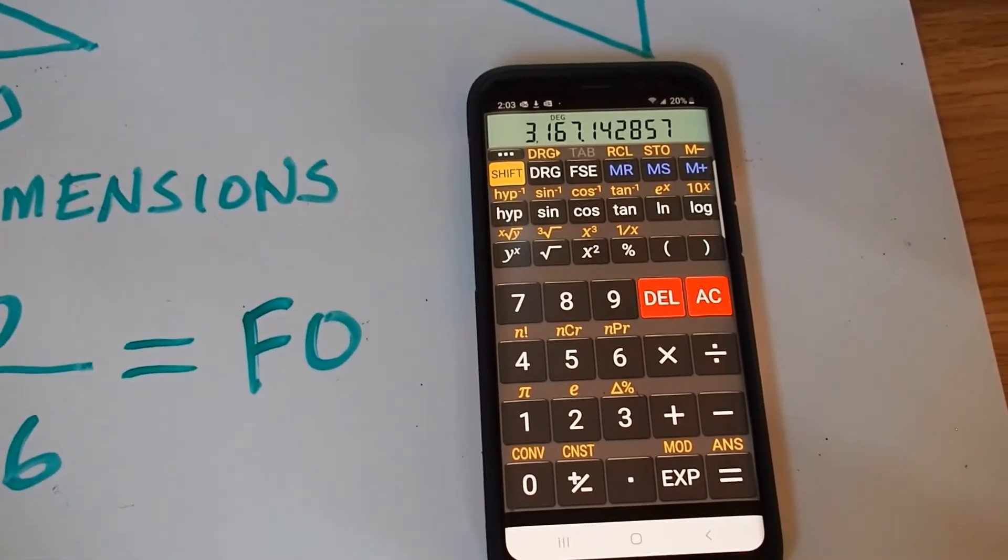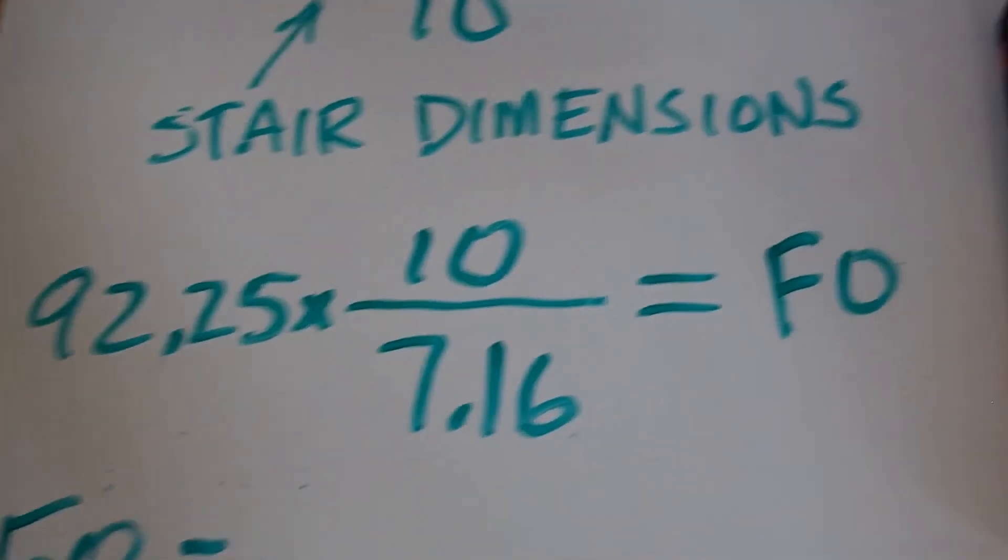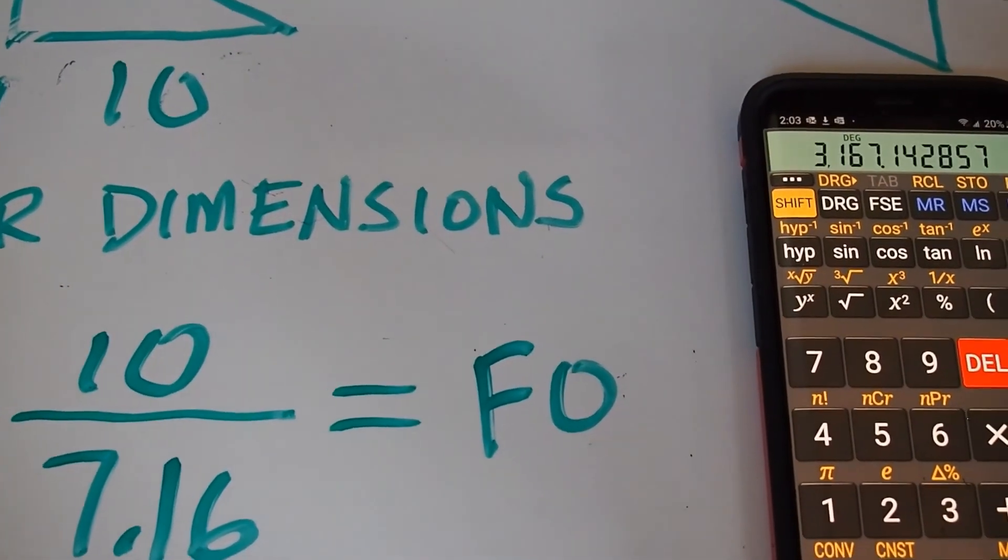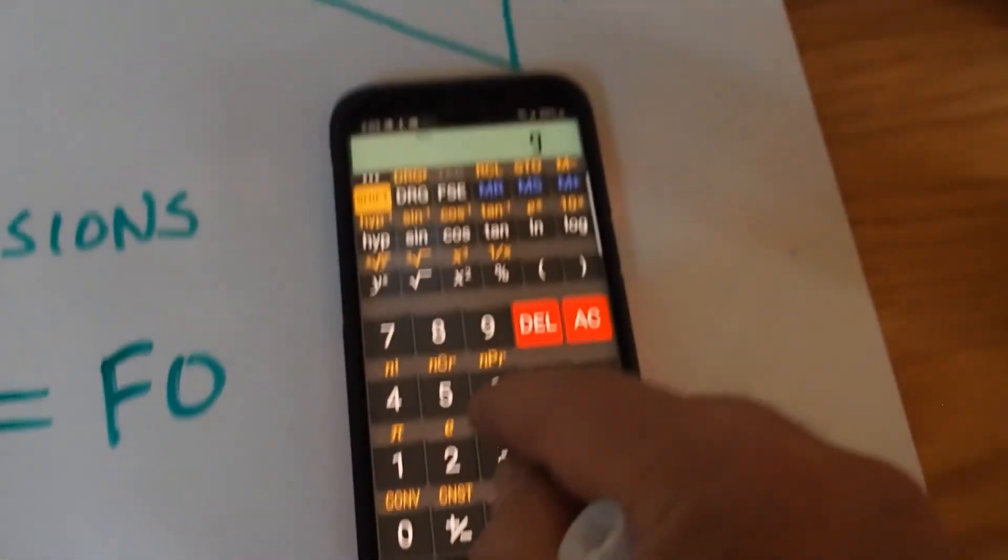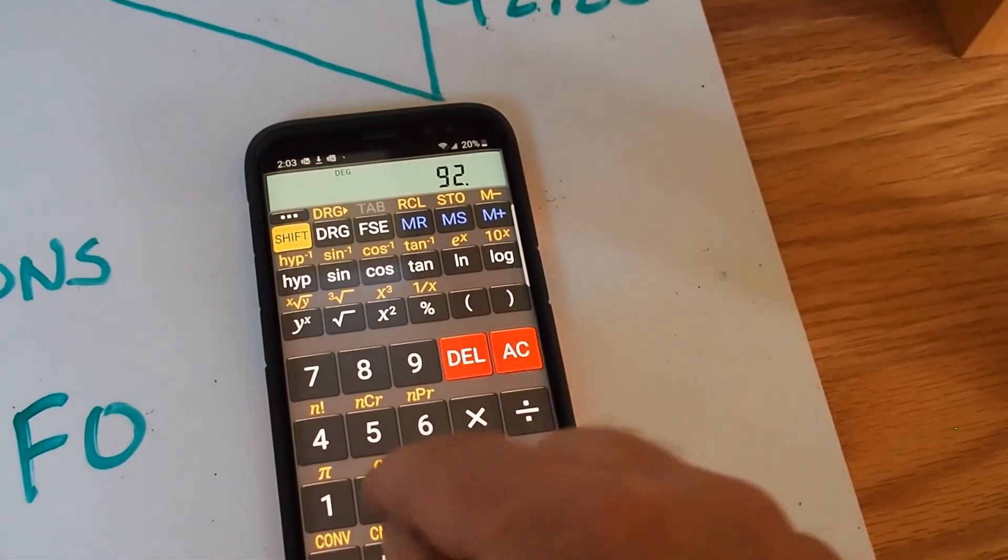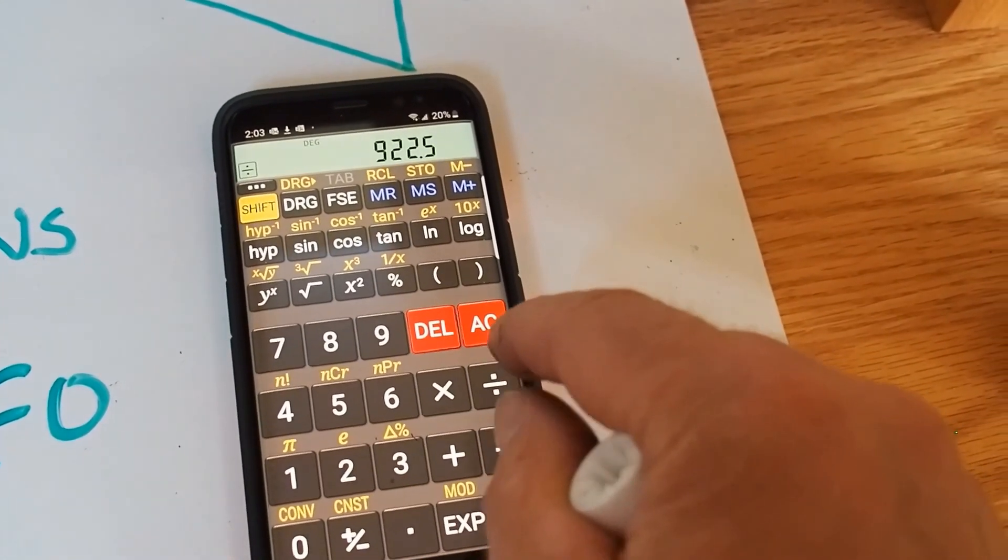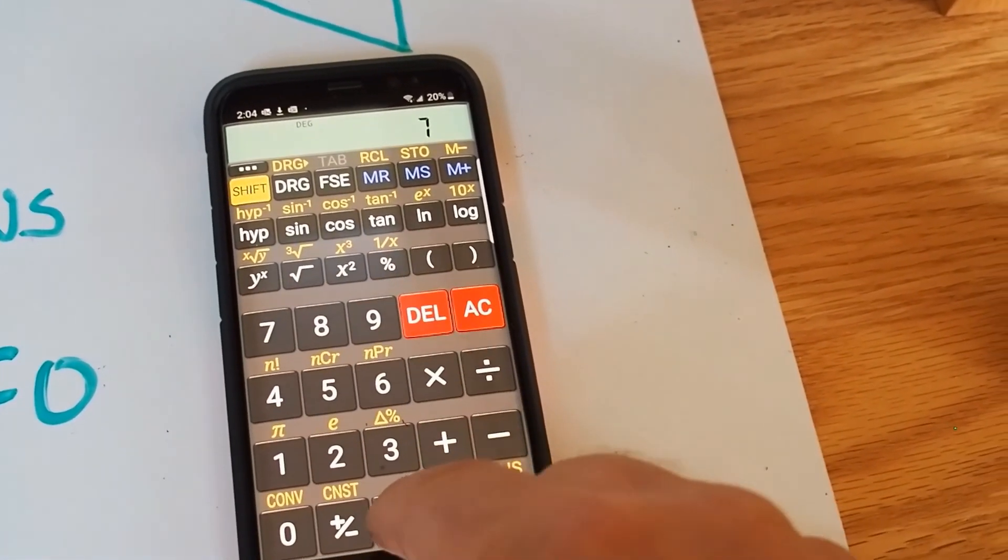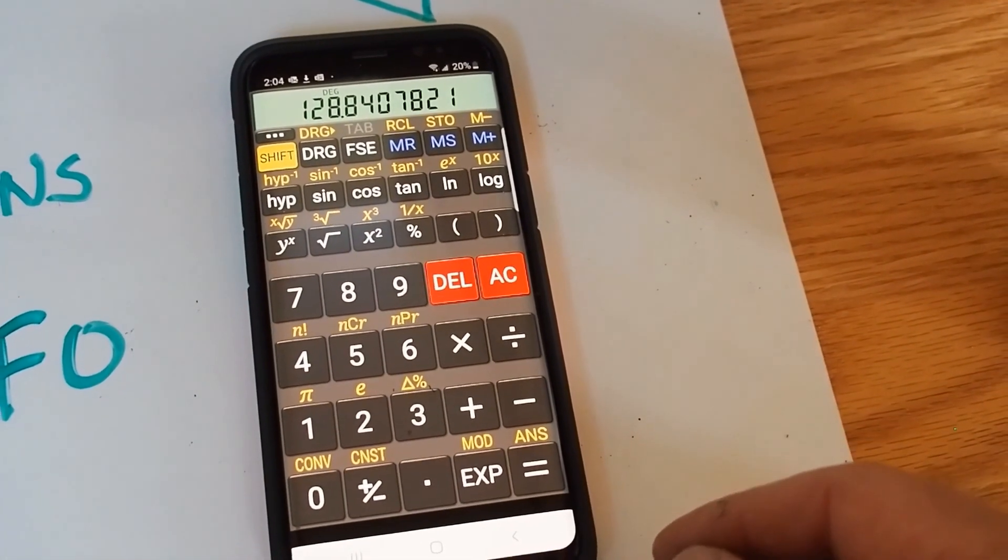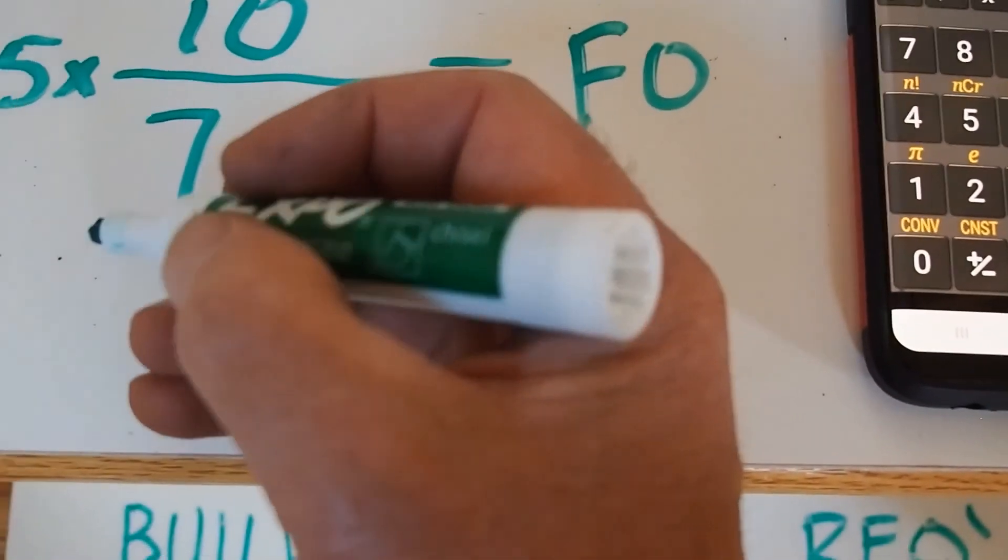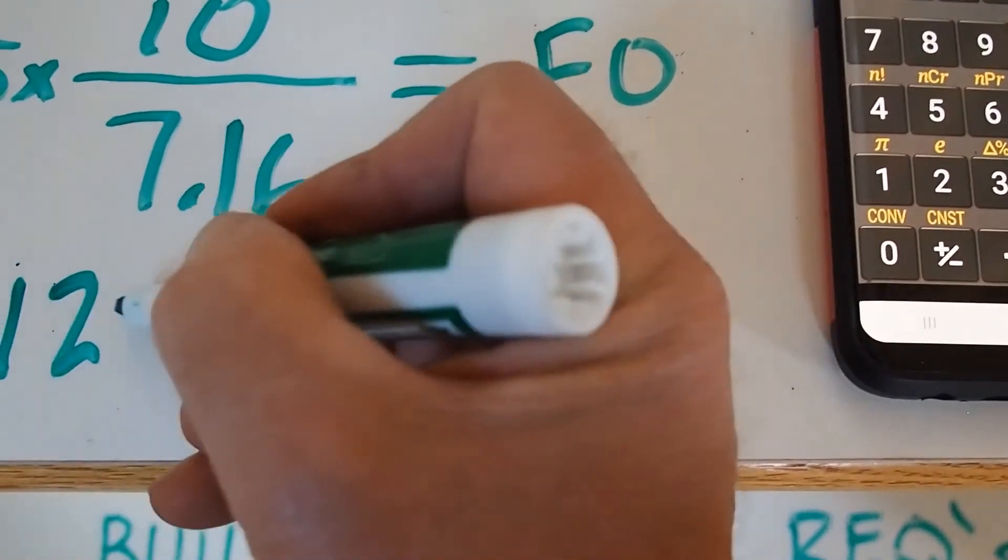And then I punch those numbers into my calculator. So here's my calculator. I've got 92.25 times 10 divided by 7.16. So 92.25 times 10 divided by 7.16, it's 128.84. So I'm just going to round that to 129 inches.